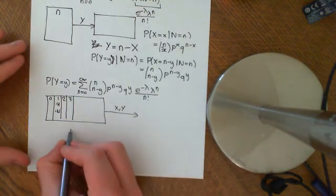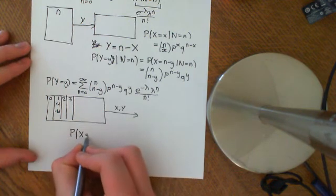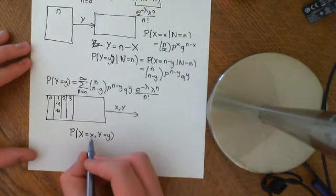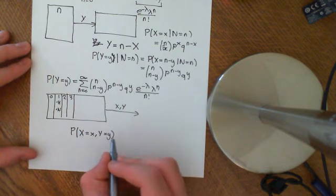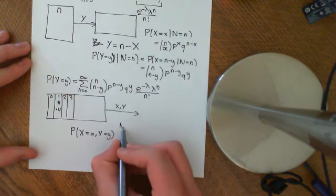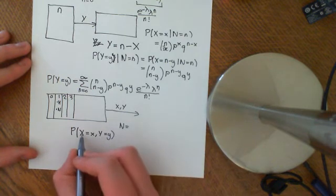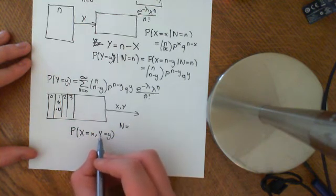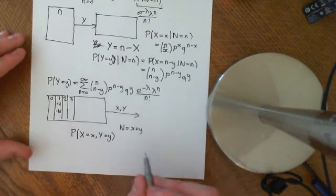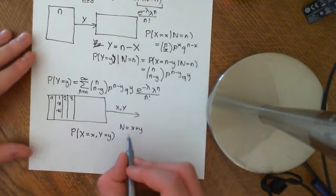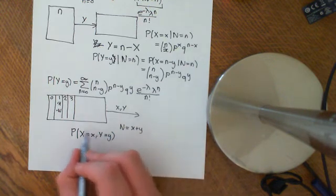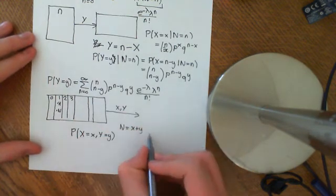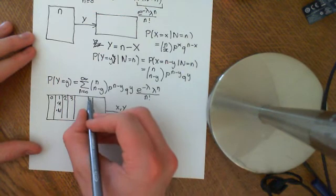We want to know what is the probability that big X is equal to little x and big Y is equal to little y. Well, if big X equals little x and big Y equals little y, then the total number of eggs she laid equals the number that hatched plus the number that didn't hatch, which is X plus Y. So any outcome which satisfies this condition is going to be within the event that little n equals X plus Y.